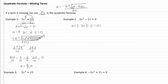So I've got negative b, which is zero, plus or minus the square root of zero squared minus 4 times a, which is 3, times c, which is negative 51, all over 2 times a, which is 3. This simplifies: the zero disappears, and we have 4 times 3 times negative 51, which gives us 612, all over 2 times 3, which is 6.